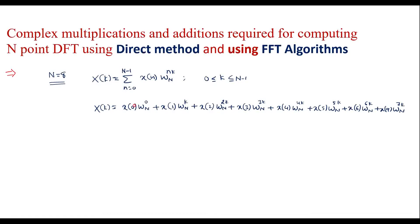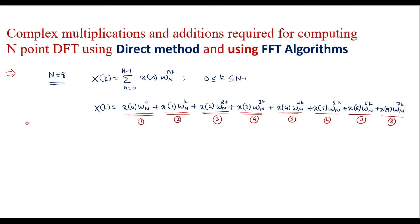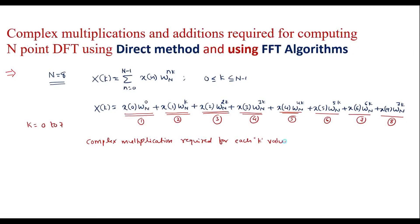Now here we can see that x(0) is multiplied with a twiddle factor — this requires one multiplication operation. Similarly x(1) is multiplied with W_N power k, requiring a second multiplication. Counting through all terms we get the 3rd, 4th, 5th, 6th, 7th, and 8th multiplications. Since k varies from 0 to 7, for each value of k it involves 8 complex multiplications. So complex multiplications required for each k value is equal to 8.